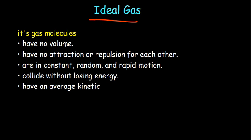An ideal gas is a hypothetical gas composed of molecules that follow these rules: the molecules have no volume (they take up no space); the gas molecules have no attraction or repulsion for each other; they are in constant, random, rapid motion; and they collide without losing energy (perfectly elastic collisions).